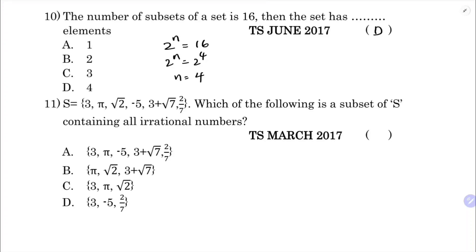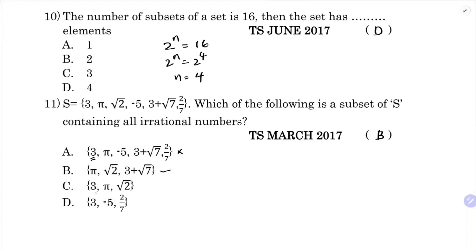Eleventh question: universal set S contains 3, pi, root 2, minus 5, 3 plus root 7, and 2/7. Which subset contains all irrational numbers? Option A includes 3 which is rational. Option B contains pi, root 2, and 3 plus root 7, which are all irrational. Options C and D include rational numbers. So the correct option is B.